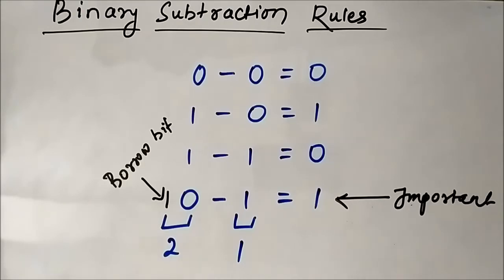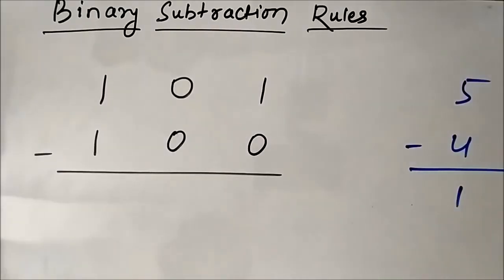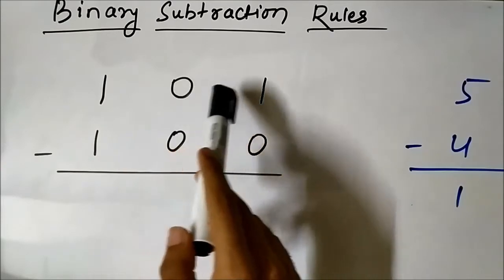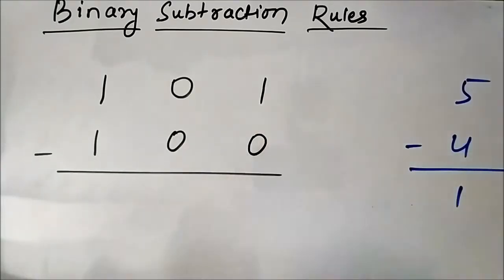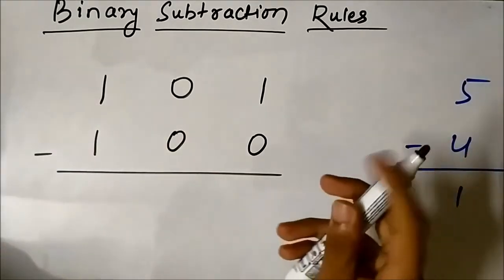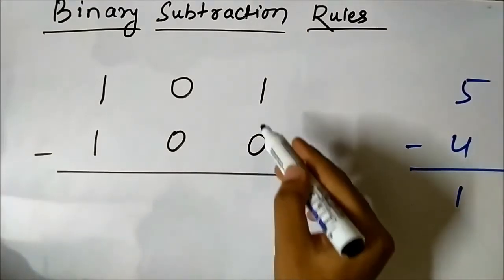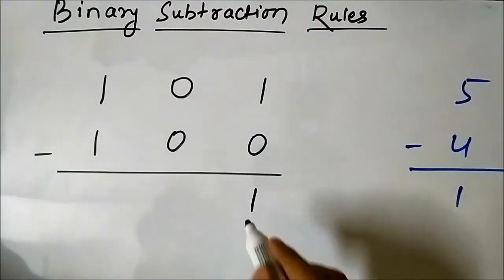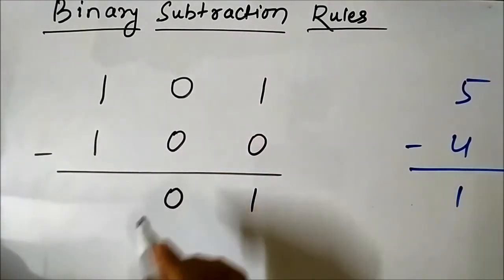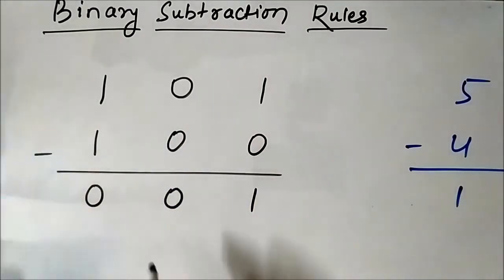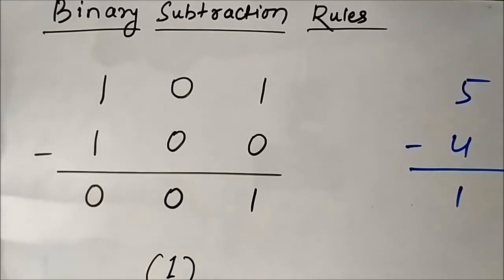Let us perform some subtraction examples. First example: 5 minus 4. In binary, 5 is 101 and 4 is 100. In decimal the result is obviously 1. Checking in binary: 1 minus 0 is 1, 0 minus 0 is 0, 1 minus 1 is 0. The result is 001, which is 1 in decimal — the same result confirmed.